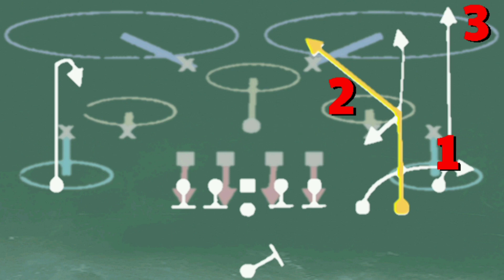If it is Tampa 2, the post will be taken away by the drop middle linebacker. You can always go for the sideline shot versus 2.